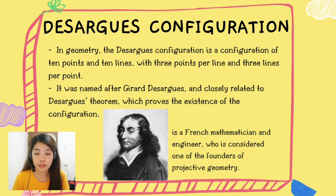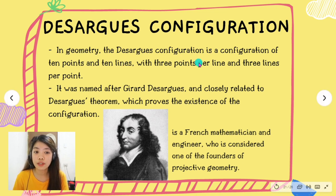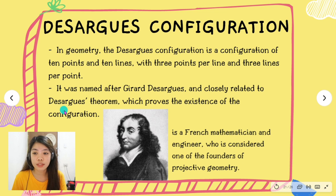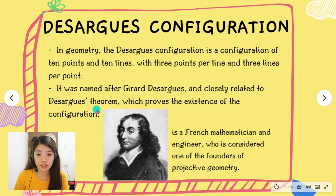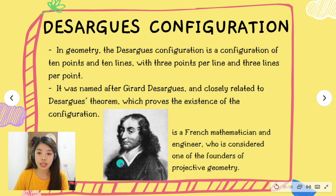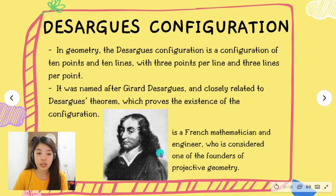In geometry, the Desargues configuration is a configuration of 10 points and 10 lines with 3 points per line and 3 lines per point. It was named after Girard Desargues and is closely related to Desargues theorem, which proves the existence of the configuration. Girard Desargues was a French mathematician and engineer who is considered one of the founders of projective geometry.